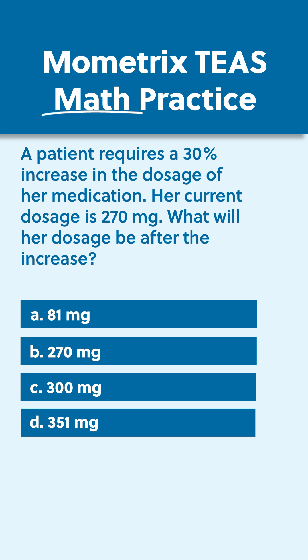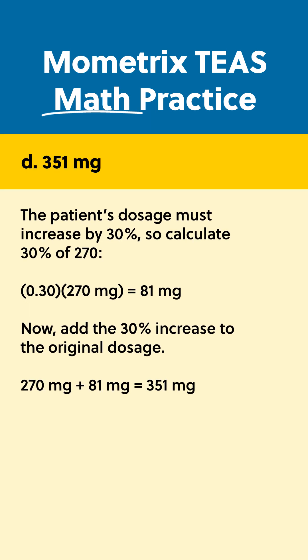The correct answer is D. The patient's dosage must increase by 30%, so calculate 30% of 270. 0.3 times 270 milligrams equals 81 milligrams. Now add the 30% increase to the original dosage: 270 milligrams plus 81 milligrams equals 351 milligrams.